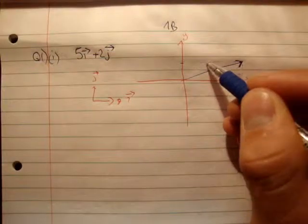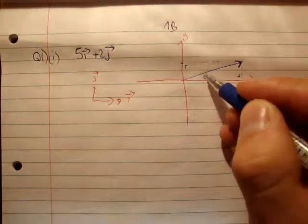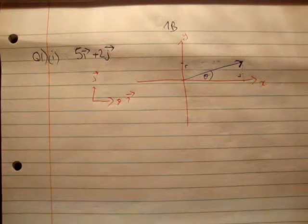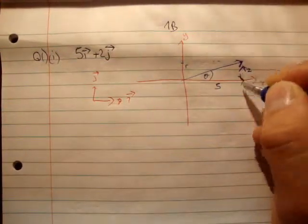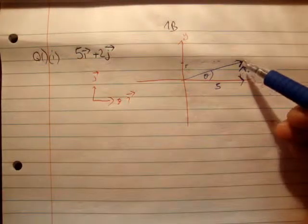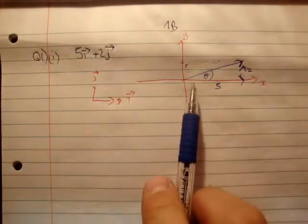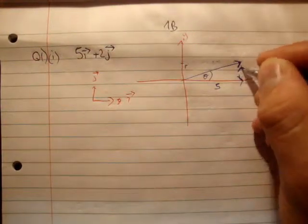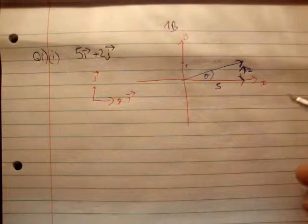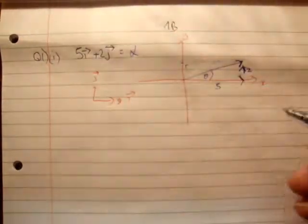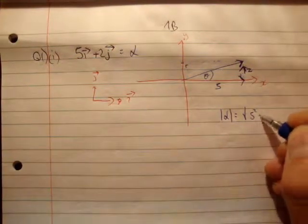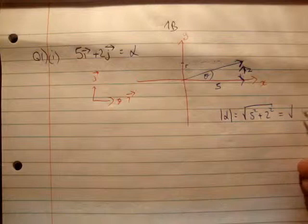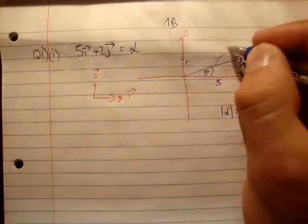You could also drop the perpendicular this way, it doesn't really matter. I'll call it theta here. Next, we get our magnitude — this is 5, this is 2. The 5i plus 2j is the resultant vector, made up of the component vectors 5i hat and 2j hat. So, we'll call it alpha. The magnitude of alpha is equal to the square root of 5 squared plus 2 squared, which equals the square root of 29.